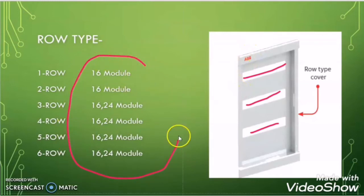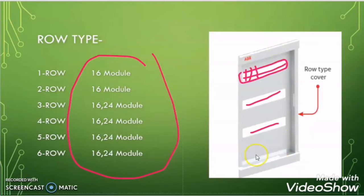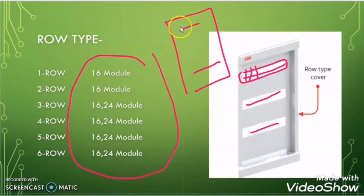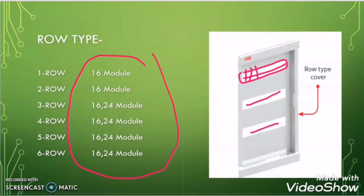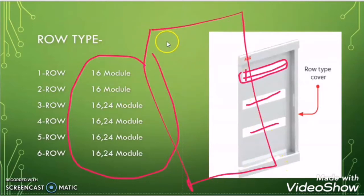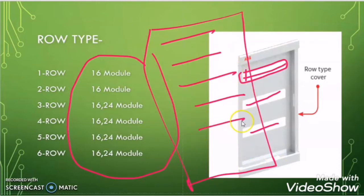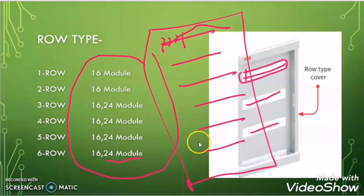Now let us talk about the modules. If this single row has space to accommodate 16 MCBs or 16 modules, then this enclosure will be called three row 16 module. If a panel has two rows and each row can accommodate 16 modules, that enclosure will be called two row 16 module. In the same way, if a panel has six rows and each row has space to accommodate 24 modules, that enclosure will be called six row 24 module.